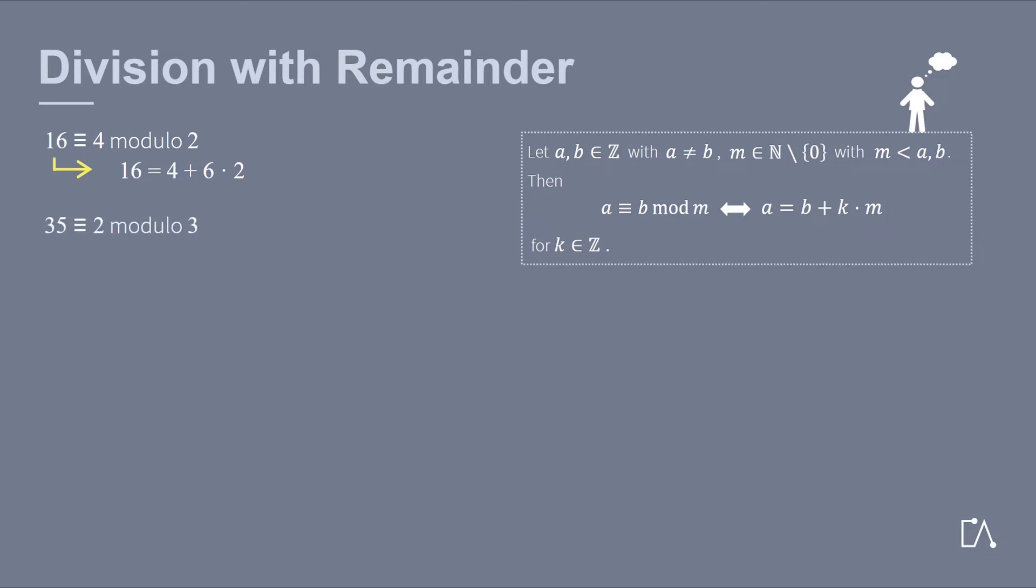It is also true that 35 equals 2 modulo 3, since 35 can be written as 2 plus 11 times 3. Does 42 equal 11 modulo 5 also hold? No.